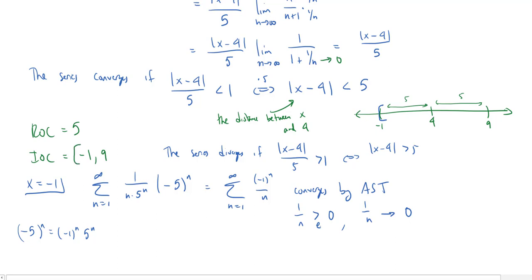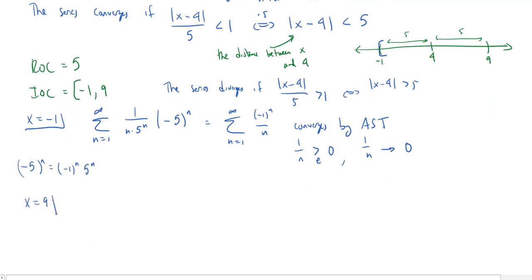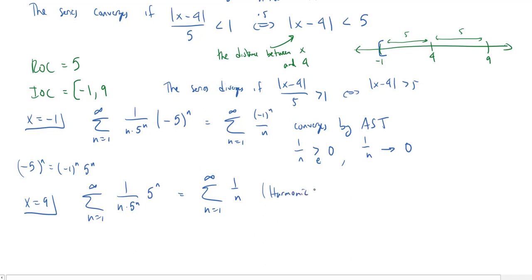How about at x equals 9? We plug in x equals 9: we have the sum from n equals 1 to infinity of 1 over (n times 5 to the n), and now (9 minus 4) to the n is 5 to the n. Again the 5 to the n's cancel, but this time we don't get an alternating factor — we just get 1 over n. This is the harmonic series, which diverges. So we do not get convergence at the right endpoint at 9, and we leave that as a parenthesis.